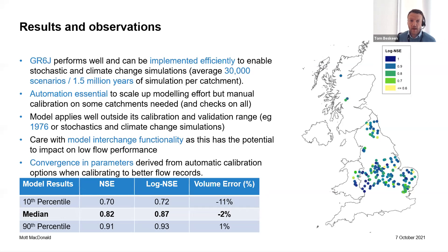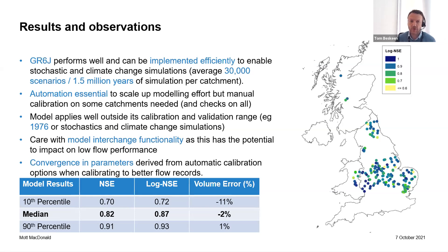The automation is really important, not just for the automatic calibration but in other aspects of the work in terms of data processing. But again, that manual calibration and review on catchments is really important. Obviously all the catchments we were looking at had manual checks on them to make sure we were happy with the model performance. The model does apply well outside of its calibration and validation ranges — including 1976 — and when we've looked at the stochastic and climate change simulations and viewed those results, they are plausible and reasonable. Though I would say 1976 does present some specific issues that a lot of models struggle with, and there are still some issues in that particular year for some catchments.